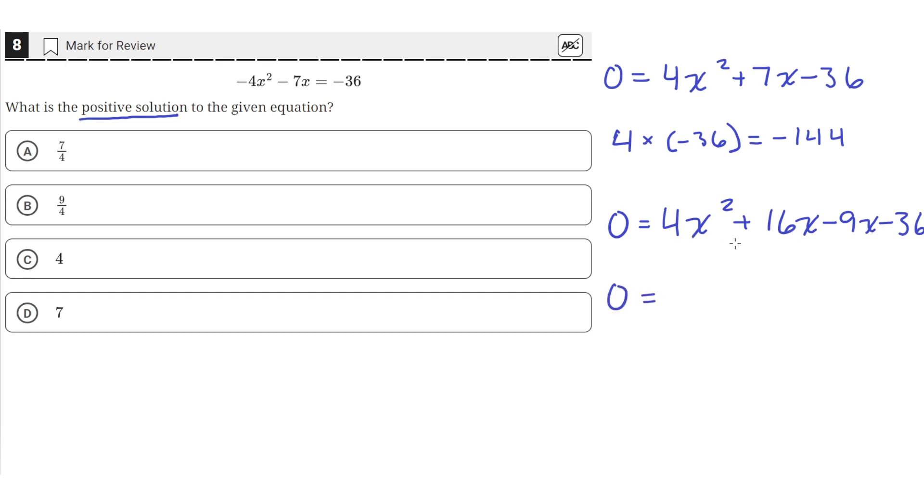So now the first two terms, we'll just factor these two. So we'll take a 4x common out. So we can take a 4x out from the first term, we'll just be left with an x. And the second term, we'll just be left with 4. So 4x times x is 4x squared, and 4x times 4 is 16x.